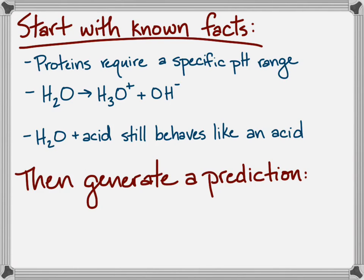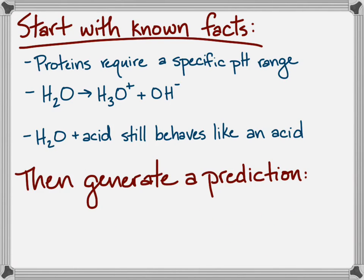So my informed expectation for the lab is that blood plasma will resist changes in pH and water will not. In other words, it's going to take a lot more acid to make the pH of blood plasma drop to a certain level than it will to get water to that same level.